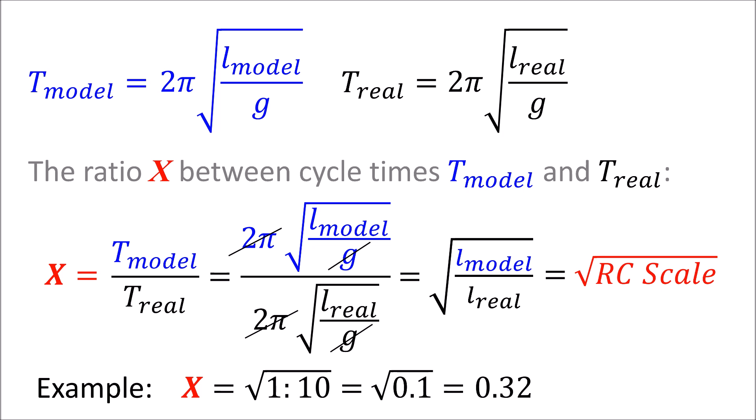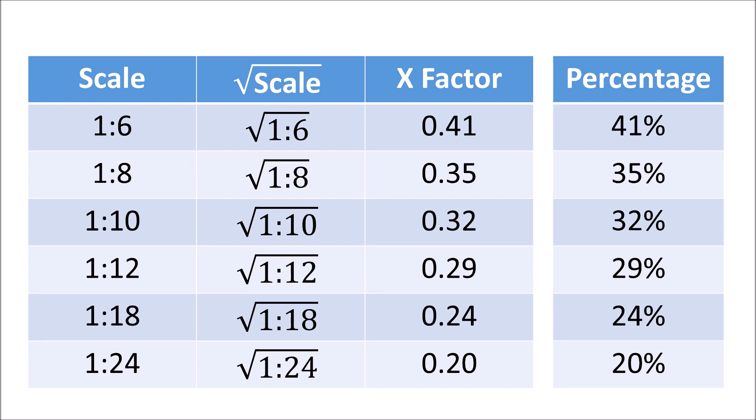For example, using an RC model in a scale of 1 to 10, we obtain a factor of 0.32. And this is the value we have to use in order to slow down footage comprising a 1 to 10 scaled model. If you're using another scale, you can take the corresponding factor out of this table.